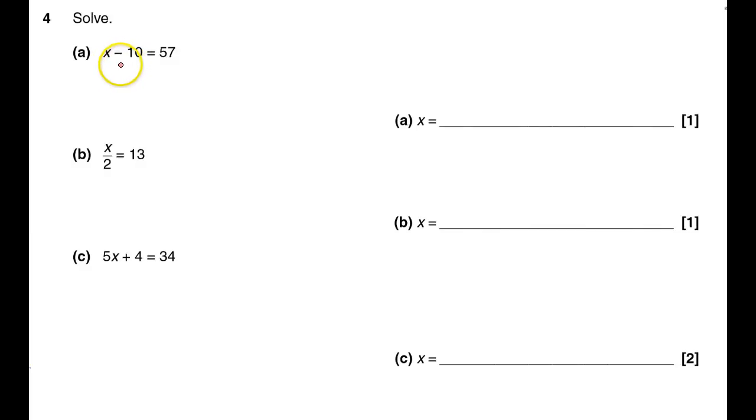For x minus 10 equals 57, if I add 10 to both sides, x will be 67. Let me check.